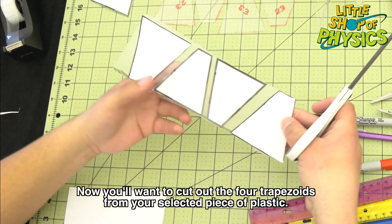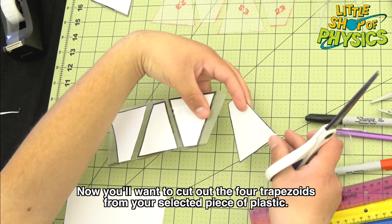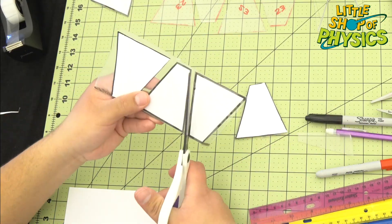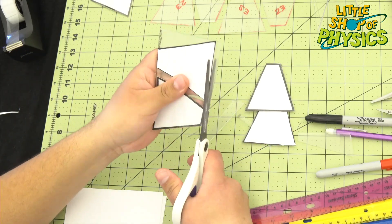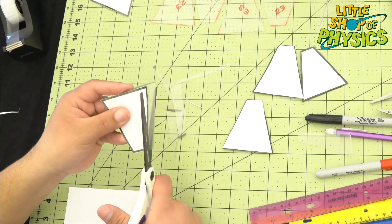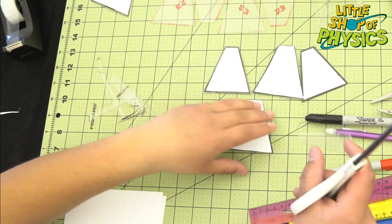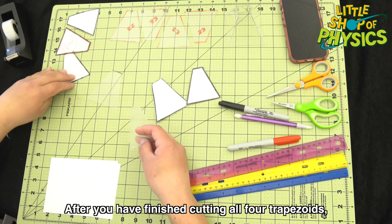Now you will want to cut out the four trapezoids from your selected piece of plastic. After you have finished cutting all four trapezoids,